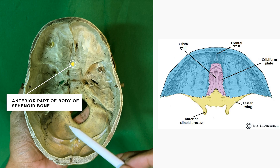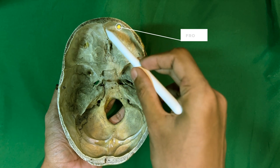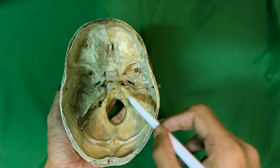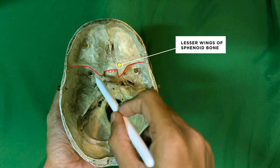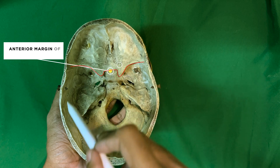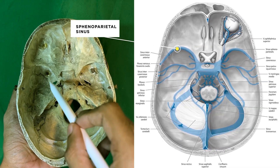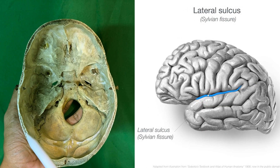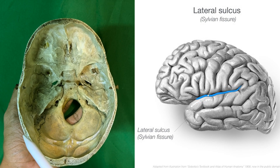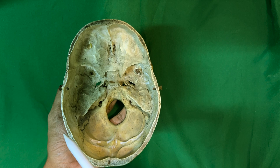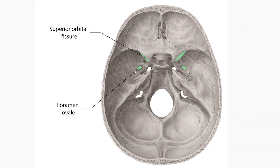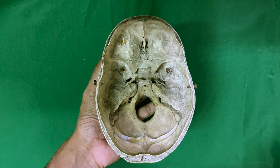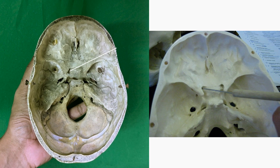It is bounded anteriorly by the frontal bone. Posteriorly, it is separated from the middle cranial fossa by the lesser wing of the sphenoid and the anterior margin of the sulcus chiasmaticus. The sphenoparietal sinus runs on the edge of the posterior border. Inferiorly, the posterior border forms the upper boundary of the superior orbital fissure. Medially, it is connected to the body of the sphenoid by anterior and posterior roots, which enclose the optic canal.